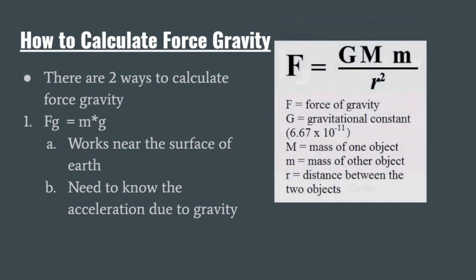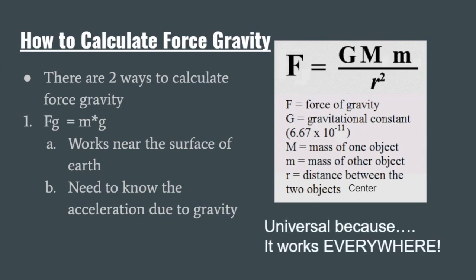So what I have over here is the Universal Law of Gravity. The reason why it's called the Universal Law of Gravity is because this is going to work everywhere. Our tiny equation, Fg equals mass times gravity, only works when we're near the surface of the Earth. But this big monster equation is going to work anywhere in the universe — anywhere that we have two masses and a distance between those masses.